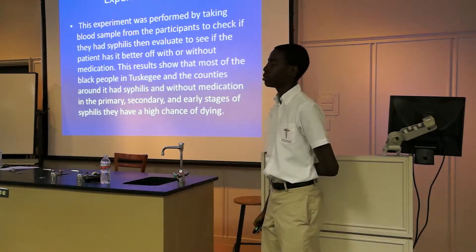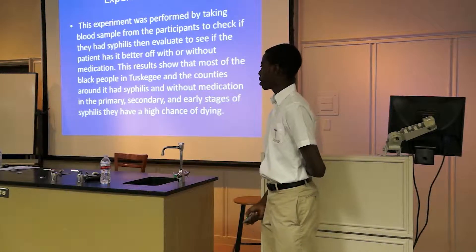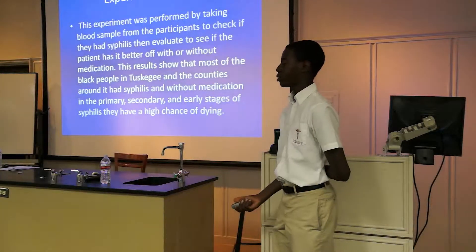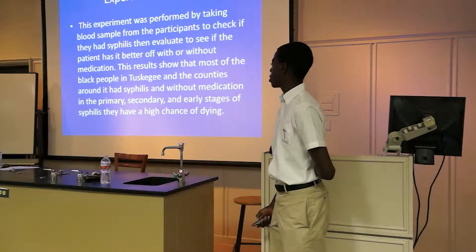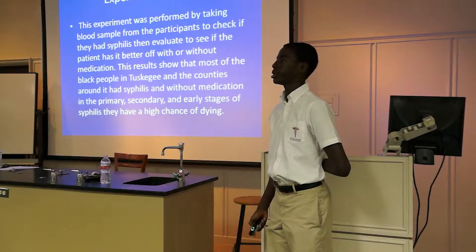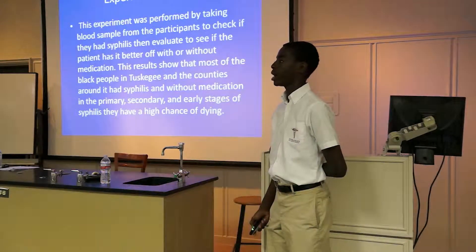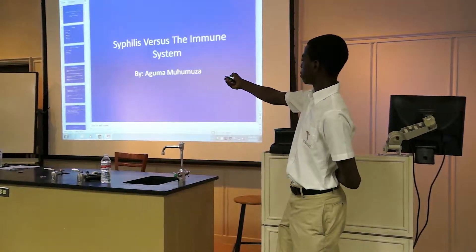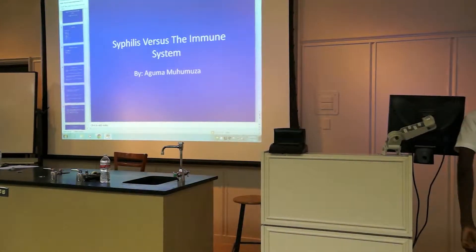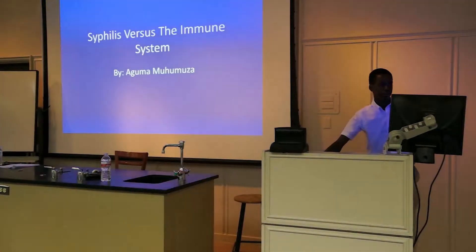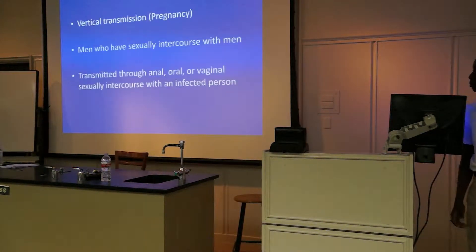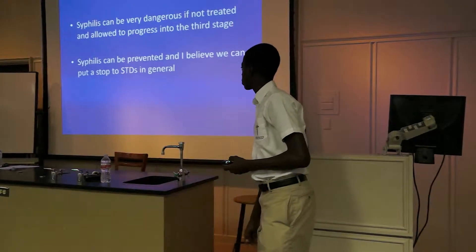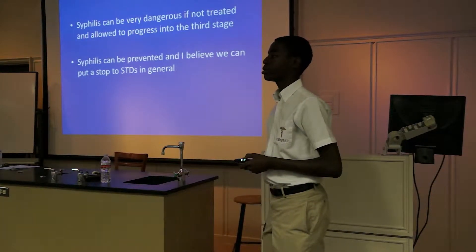The experiment was performed by taking blood samples and running tests for diagnosis, as mentioned earlier. It was shown that most of the Black males and other minorities were contracting the disease. Without medication in the primary and secondary stages, most people would go on to either die or become severely ill.